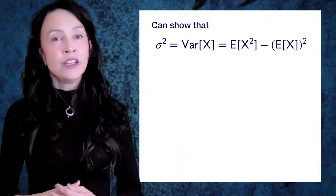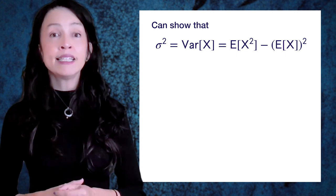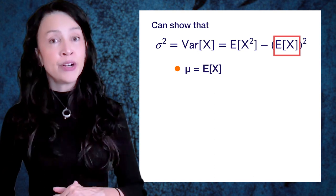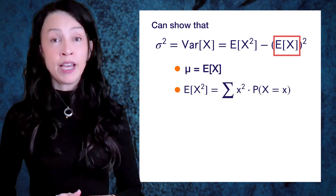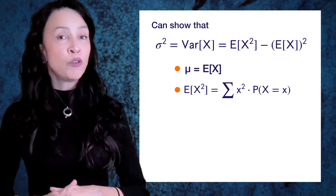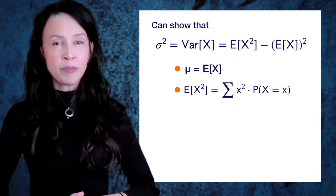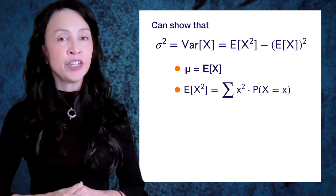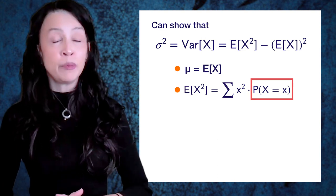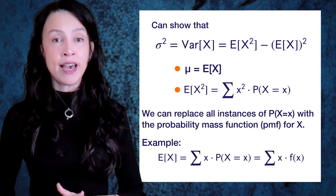The variance, being the expected value of (X minus mu) all squared - if you square that out and run the expectation through like the linear operator it is and simplify things, you will end up with the expected value of X squared minus the expected value of X, all squared. The second term, at least inside the squared, is mu and it's a constant. The expected value of X squared we can compute using the law of the unconscious statistician: sum over all little x of x squared times the probability that capital X equals little x. This right here is what we've been calling the probability mass function f(x).